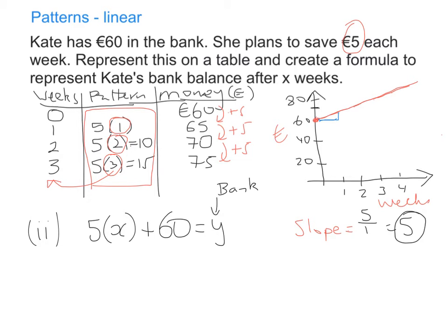So therefore, we could say, after 4 weeks, how much money is in Kate's bank account? And all you would have to do is let x equal 4. So therefore, 5 times 4 plus 60 equals y, which is her bank balance. That therefore, 20 plus 60 gives me 80. And we think that's correct. Well, let's have a look back up here. After week three, she had 75 euro. Therefore, after week four, 80 euro makes perfect sense.